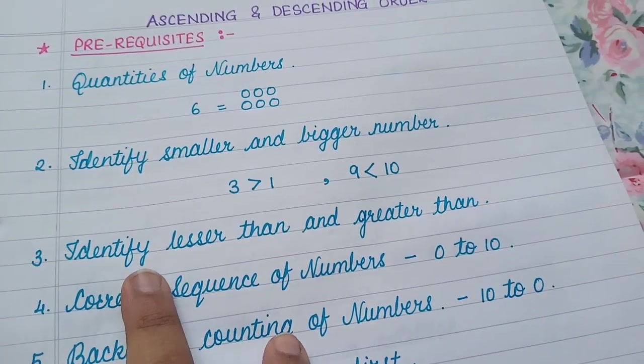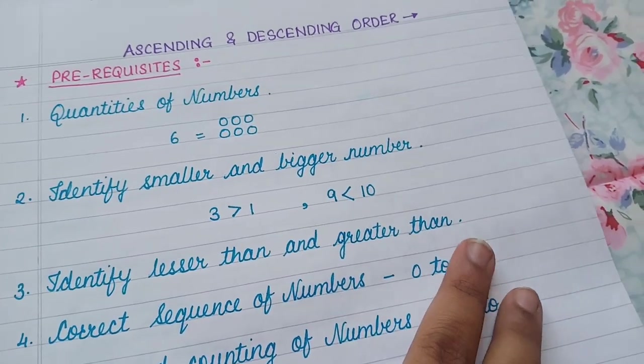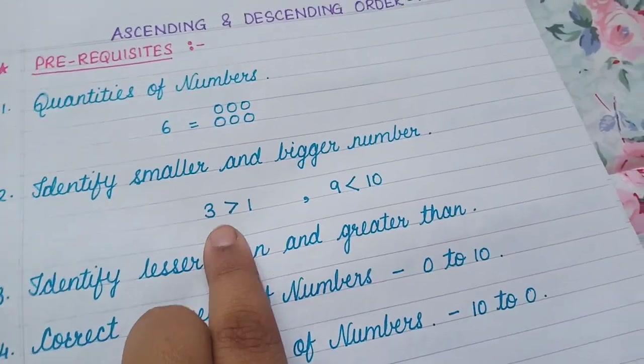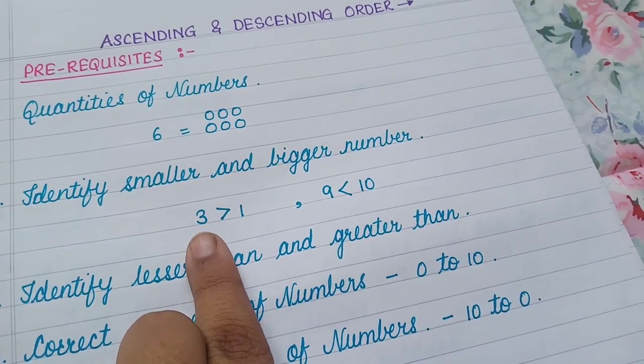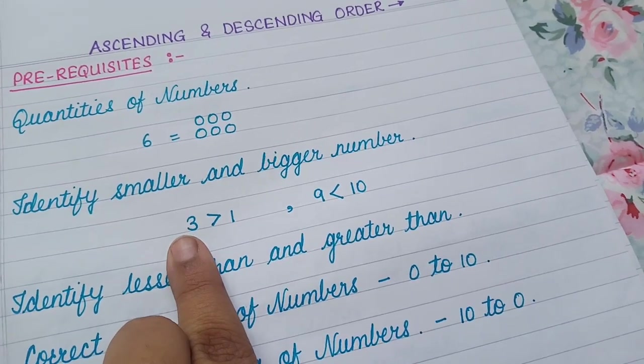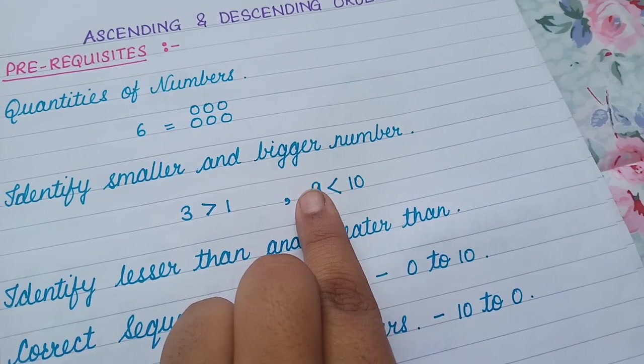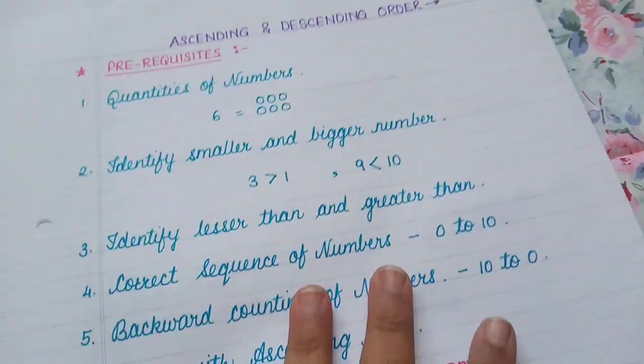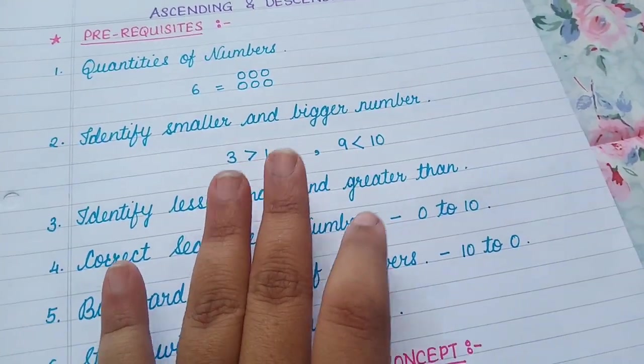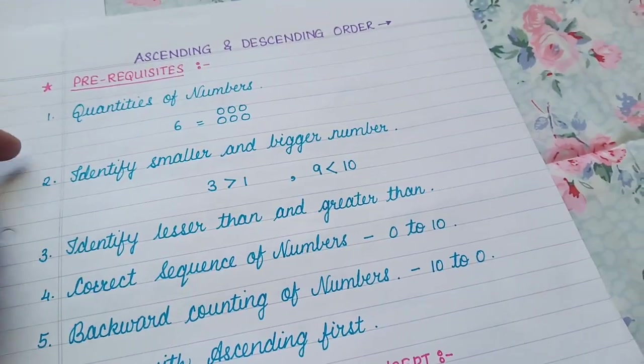The next prerequisite is the same, identify lesser than and greater than from each other. So the child should be able to say that 3 is greater than 1 or 1 is lesser than 3, 9 is lesser than 10 or 10 is greater than 9. So the child must really understand this concept in order to move forward for ascending and descending.